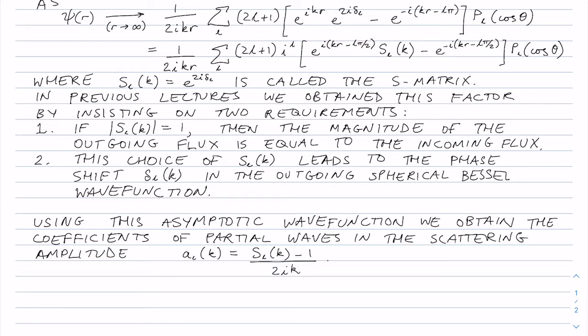So using this asymptotic wave function, we obtain the coefficients for the partial waves in the scattering amplitude, and these A_L s were defined inside the F of theta that I wrote in the last lecture. Last time we wrote A_L is equal to e to the 2 i delta minus 1 over 2 i K, but now we're going to write it in terms of this S matrix, the scattering matrix.